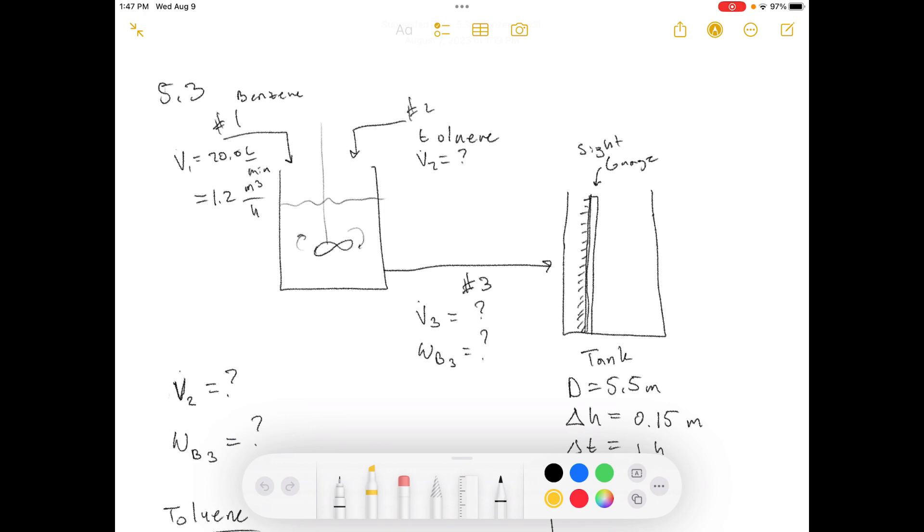So, sit back, grab a notebook, and let's dive into today's problem. Today, we're working out of Elementary Principles of Chemical Processes 3rd Edition, and we're doing problem number 5.3. Problem statement says, two liquid streams are flowing at constant rates into a blender.